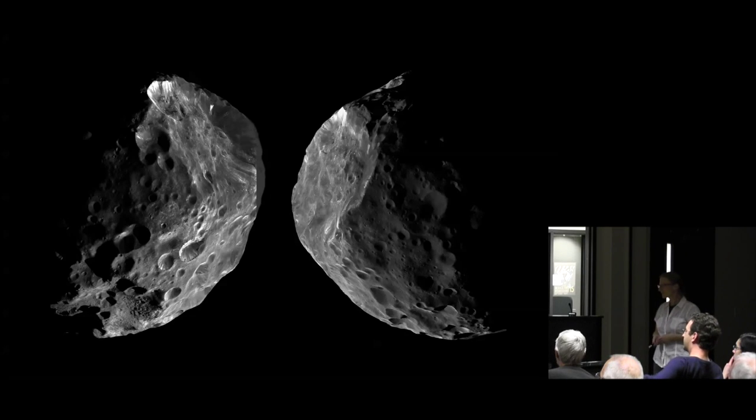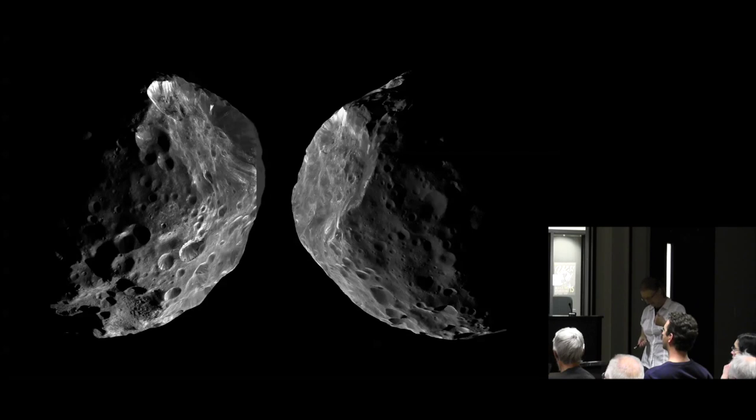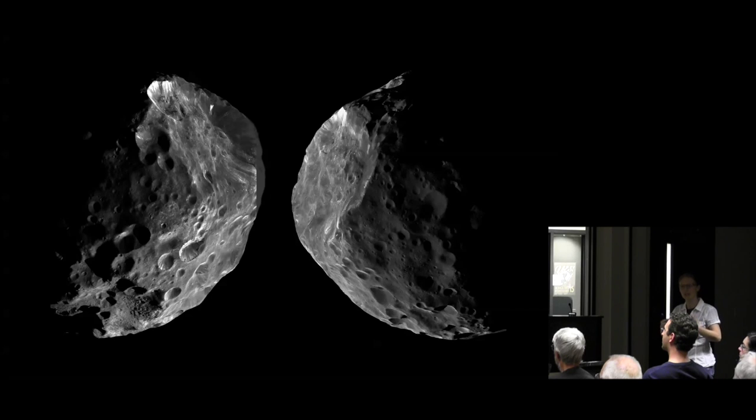This is the outermost larger moon of Saturn, Phoebe. Phoebe is in retrograde orbit. While all other moons go in the same direction, Phoebe goes the other way around. We think it's a captured Kuiper belt object. It's being bombarded and releases dust. The dust will slowly decay in orbit and spiral down into the system.